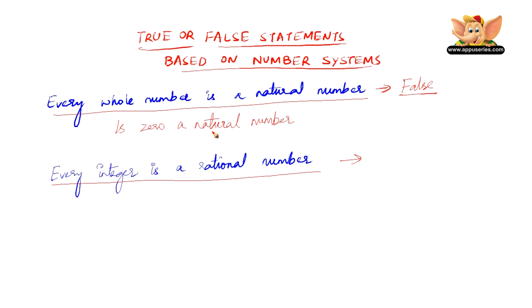Every natural number is a whole number. Every whole number is an integer. And every integer is certainly a rational number. Therefore, this is true.